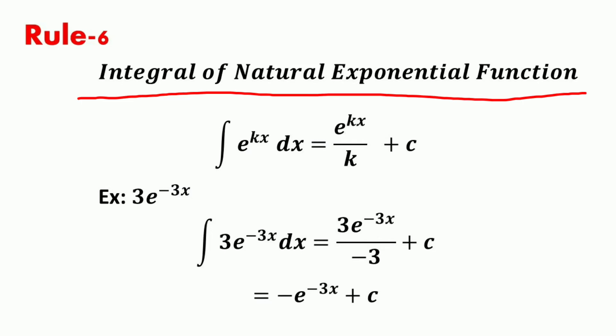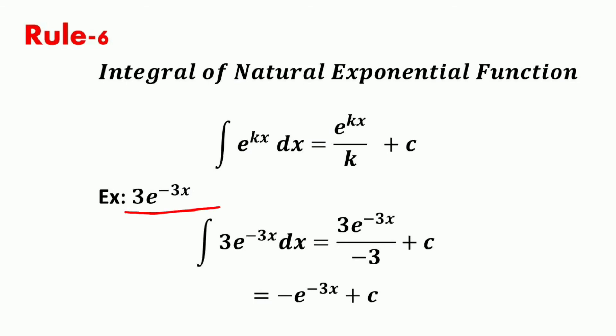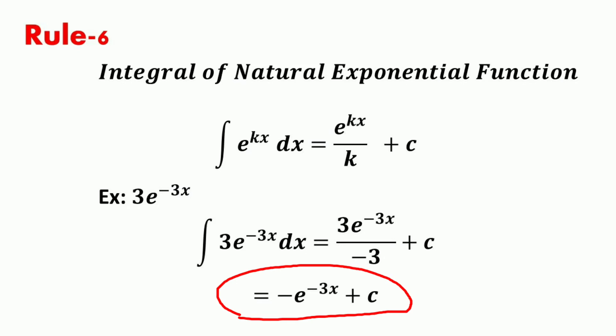The next rule is the integral of the natural exponential function, where the function is in the form of e^(kx). The integral of e^(kx) dx is equal to e^(kx) divided by k plus c. For example, for the function 3e^(−3x), the integral of 3e^(−3x) dx equals 3 times e^(−3x) divided by k, where k is minus 3, plus c, which simplifies to minus e^(−3x) plus c.